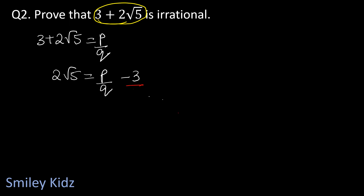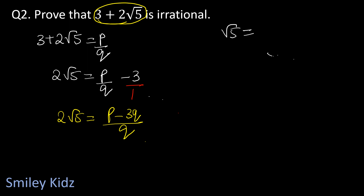Taking the LCM, we get 2 root 5 equals (p minus 3q) upon q, since q is the LCM of q and 1. Sending the 2 to the other side gives root 5 equals (p minus 3q) upon 2q, since 2 comes over to divide.